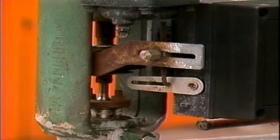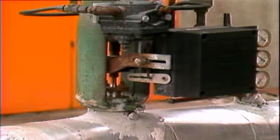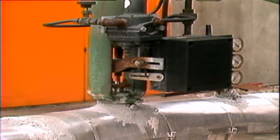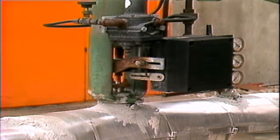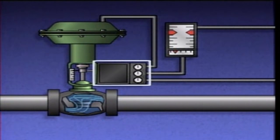The position of the linkage indicates to the positioner when enough movement has occurred to correspond with the air signal from the controller.